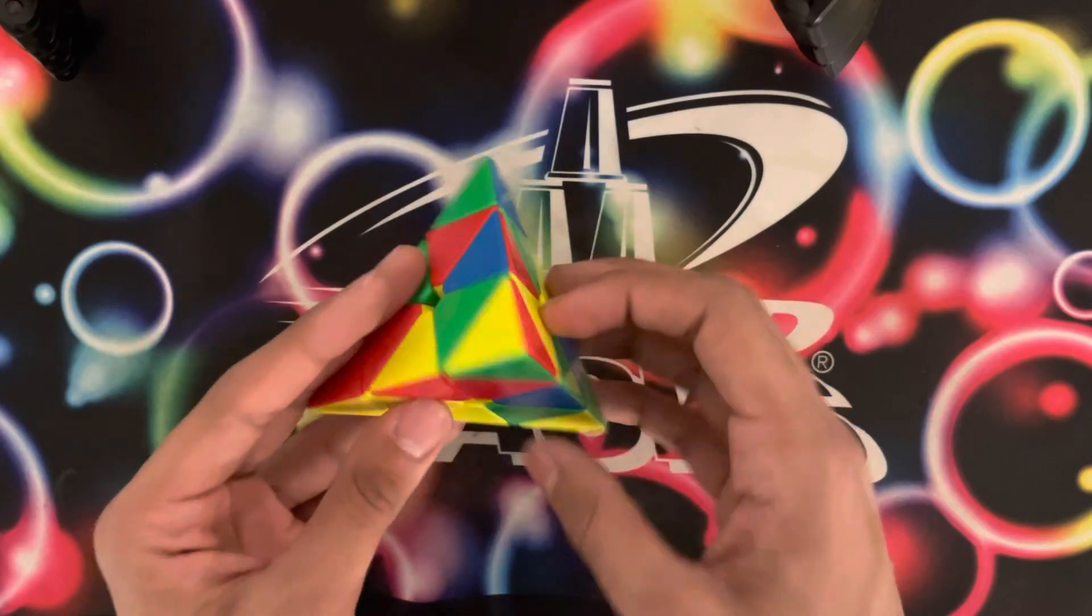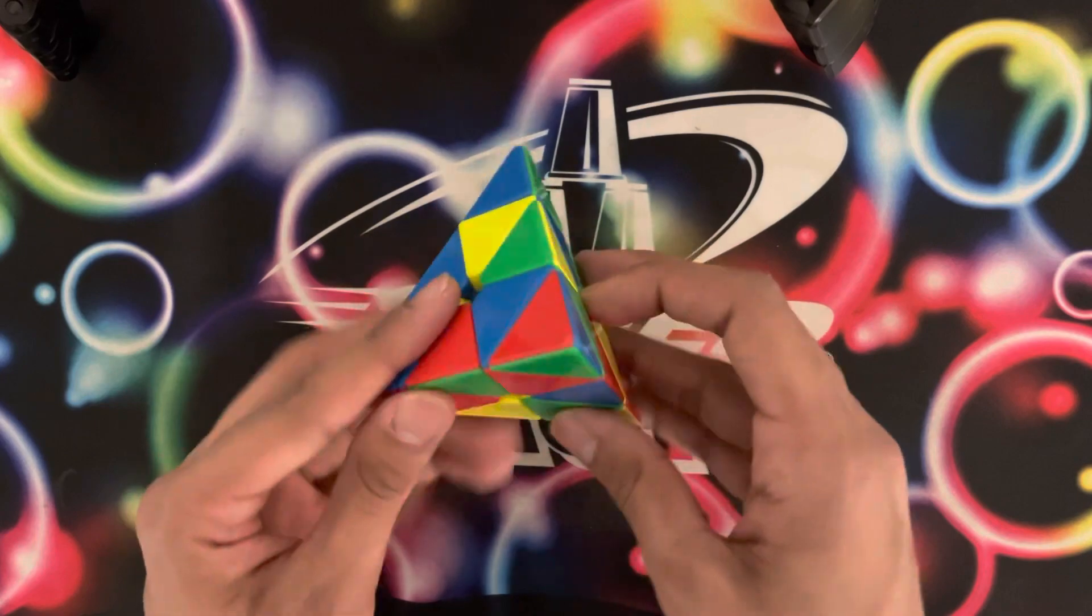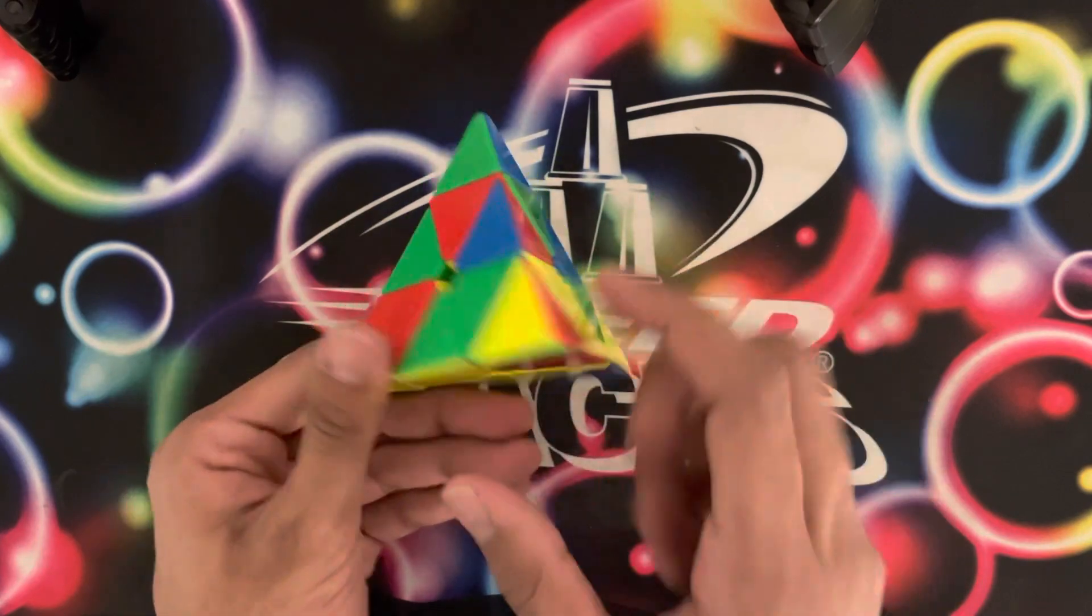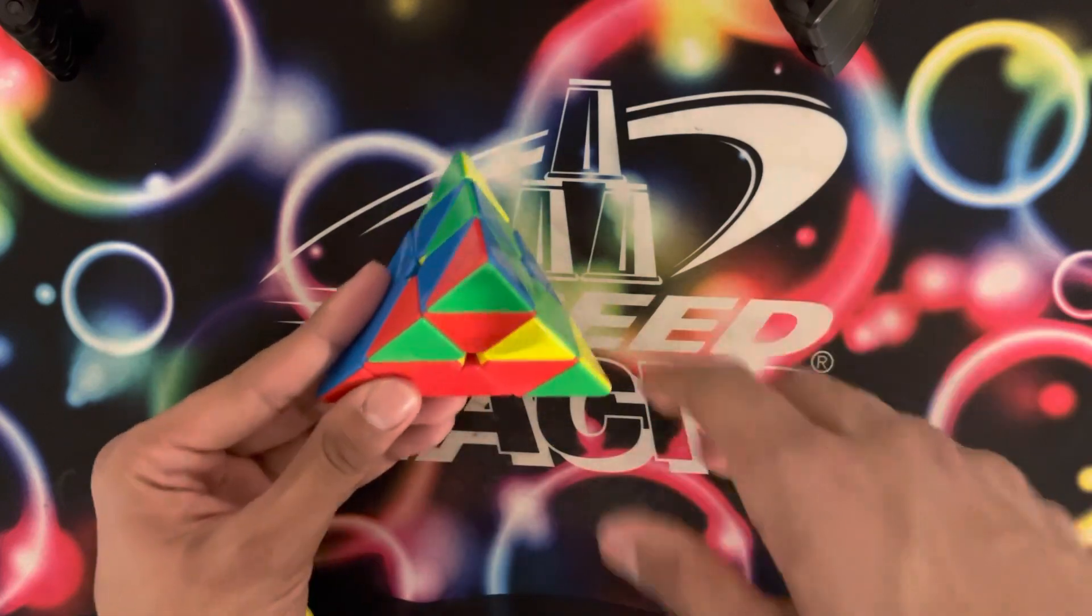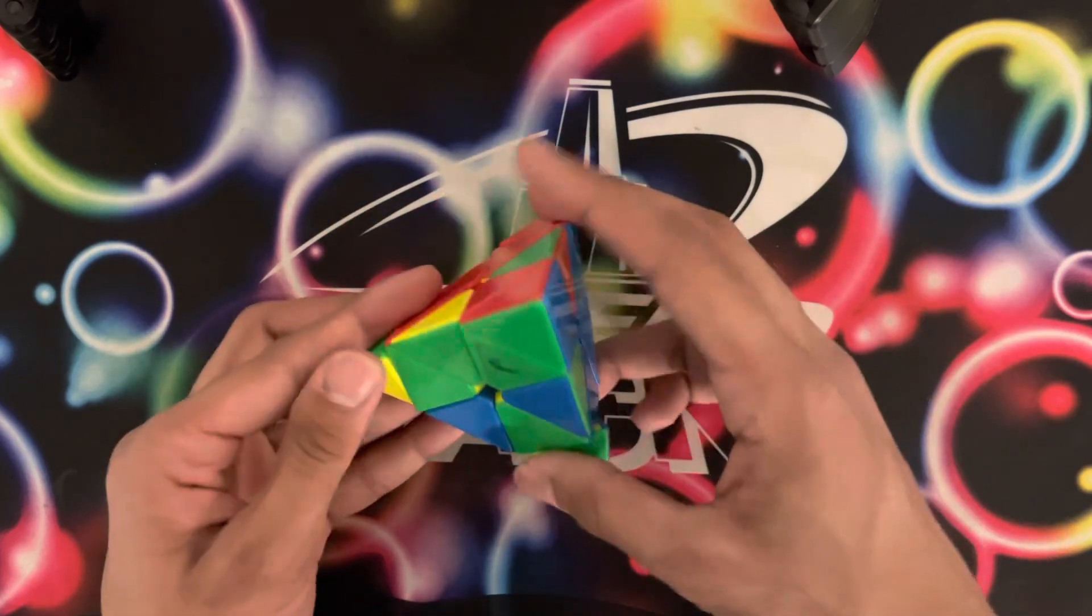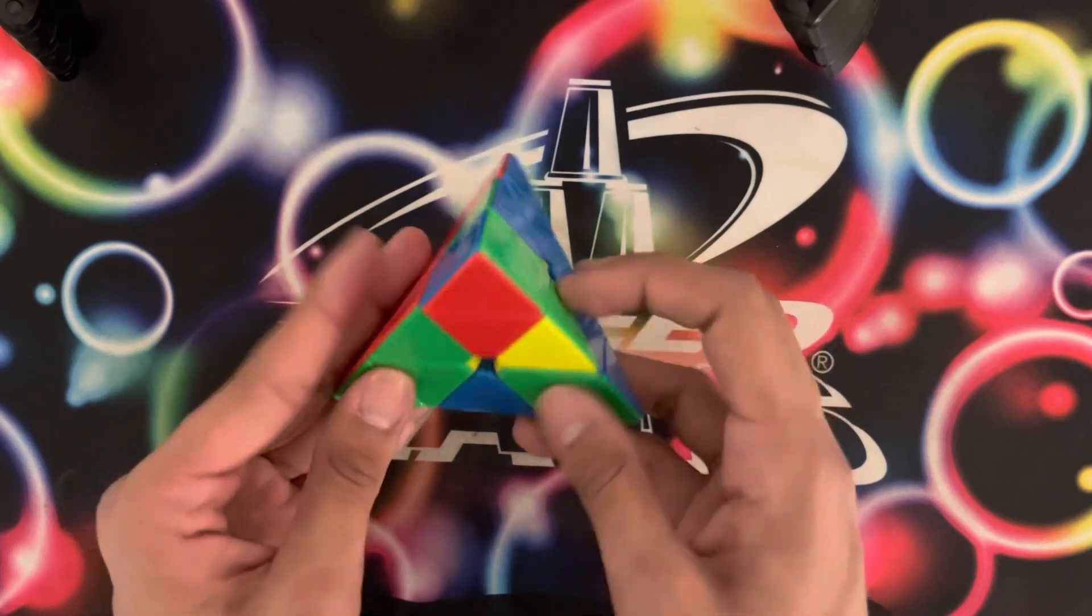On the first scramble, I messed it up pretty badly. I decided to do the yellow V. I saw that if I do L B L prime R, I would solve my V. I thought it would be solved in the front - that was my first mistake. And then here I made my second mistake: I recognized the L4E wrong, so then I had to do last layer like that.